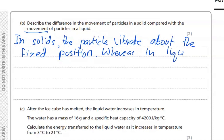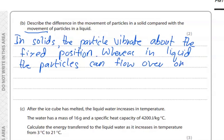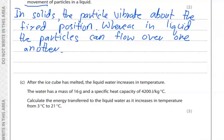In liquids, the particles can flow over one another. So in solids, the particles vibrate about the fixed position, whereas in liquids, the particles can flow over one another. These are the movements of solid and liquid and this question is only worth two marks.